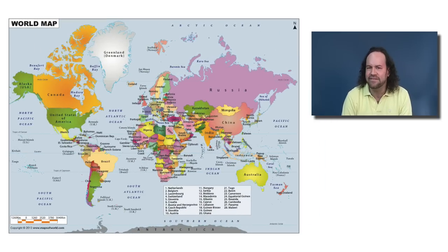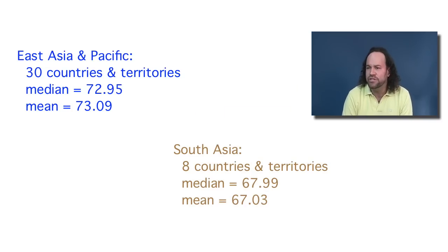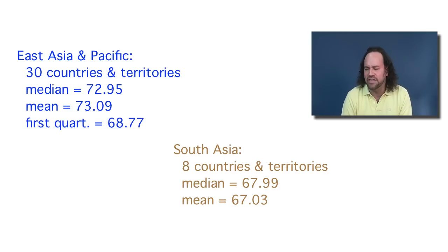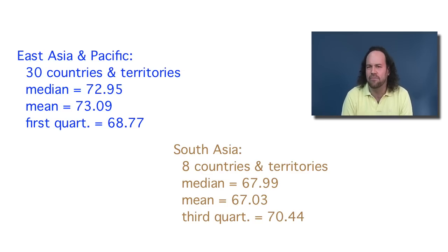Now let's consider another comparison — East Asia and the Pacific versus the South Asian countries. The South Asian countries have a median and mean both pretty close to 67 years, which is a little less than the 73 years for East Asia and the Pacific. So maybe life expectancies are a little lower in South Asia. However, the first quartile in East Asia and the Pacific was just under 69 years, while the third quartile in South Asia is over 70 years. This means the comparison isn't quite so clear cut, and the quartiles don't completely order themselves as they did before.